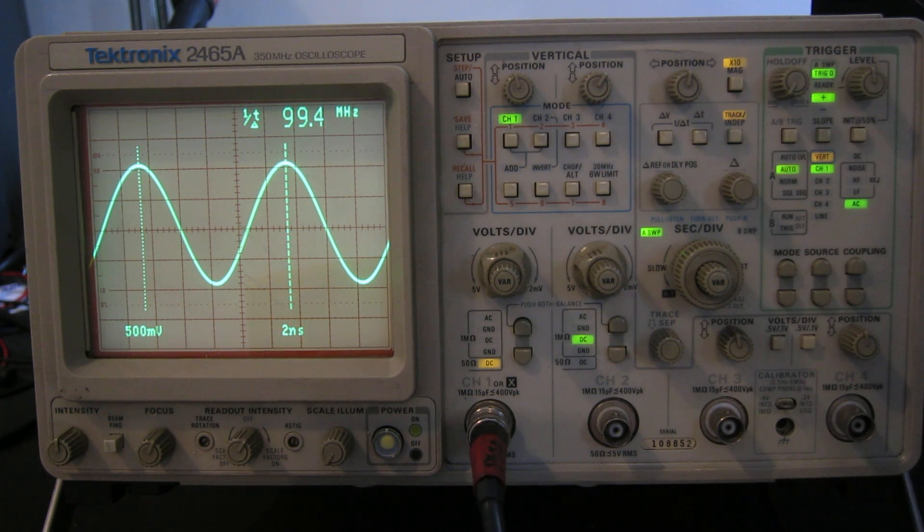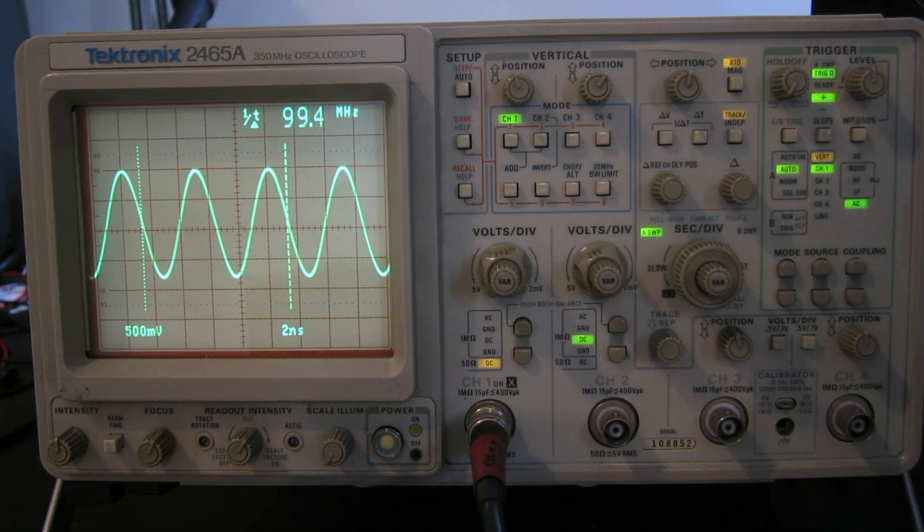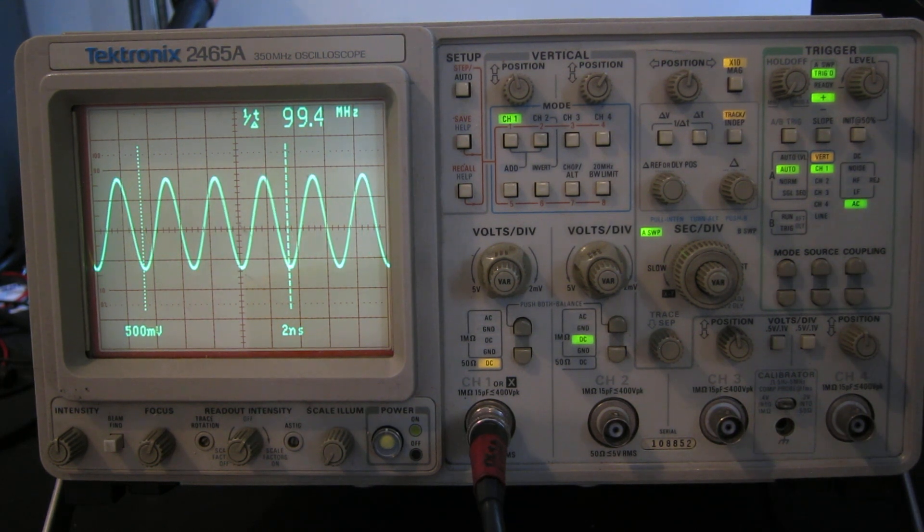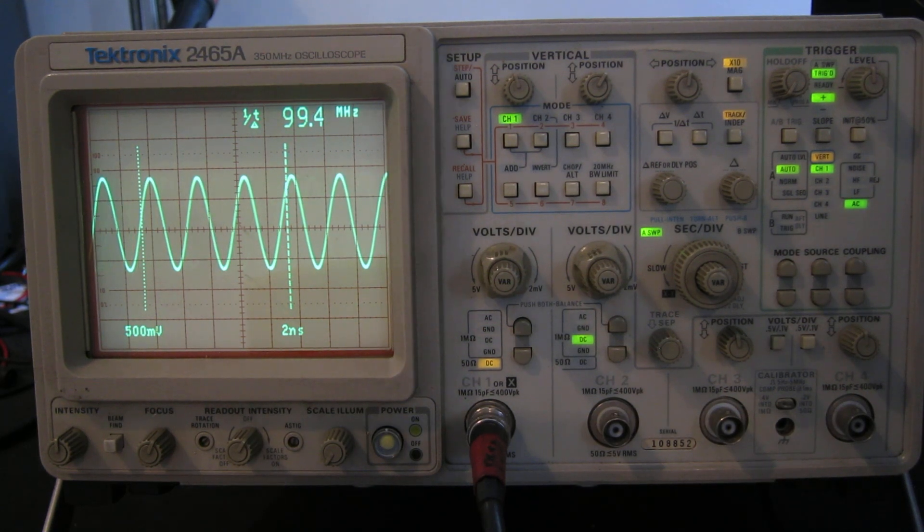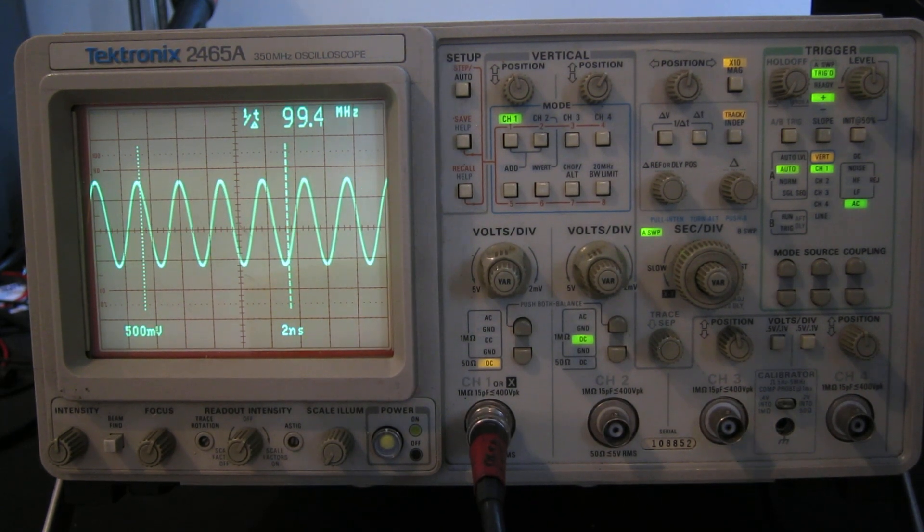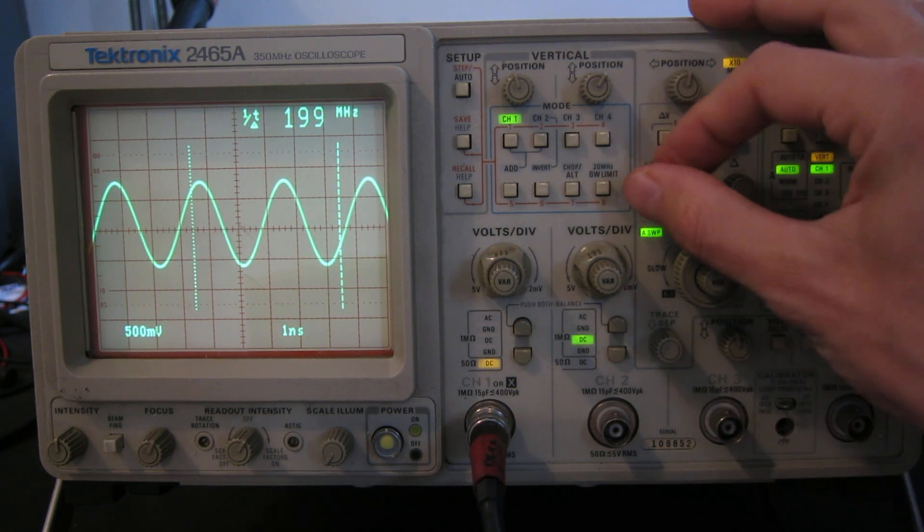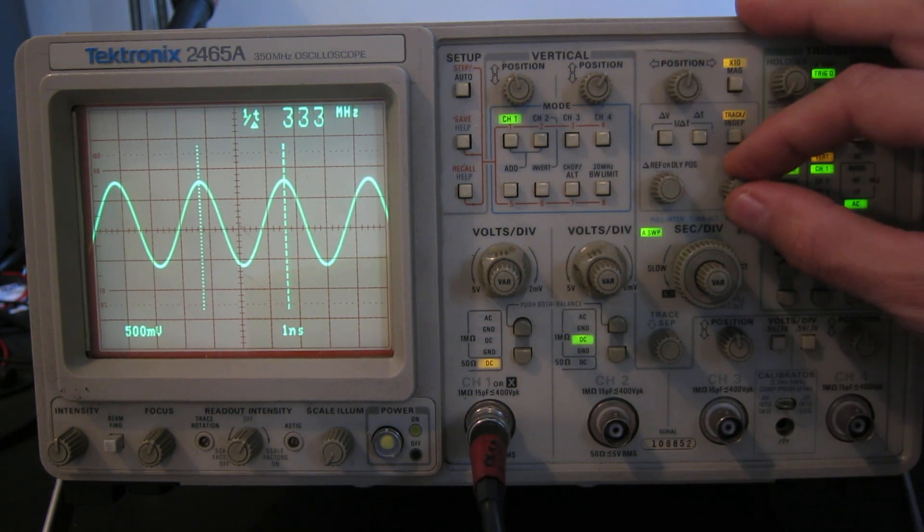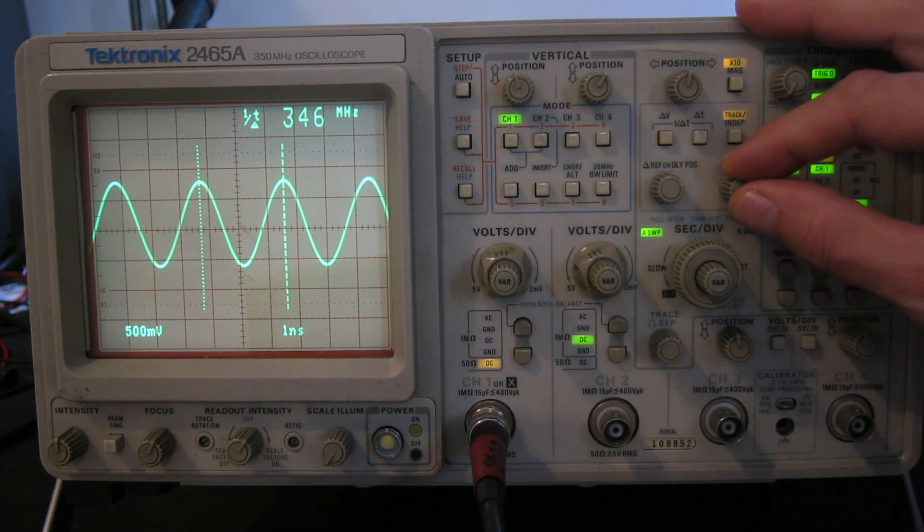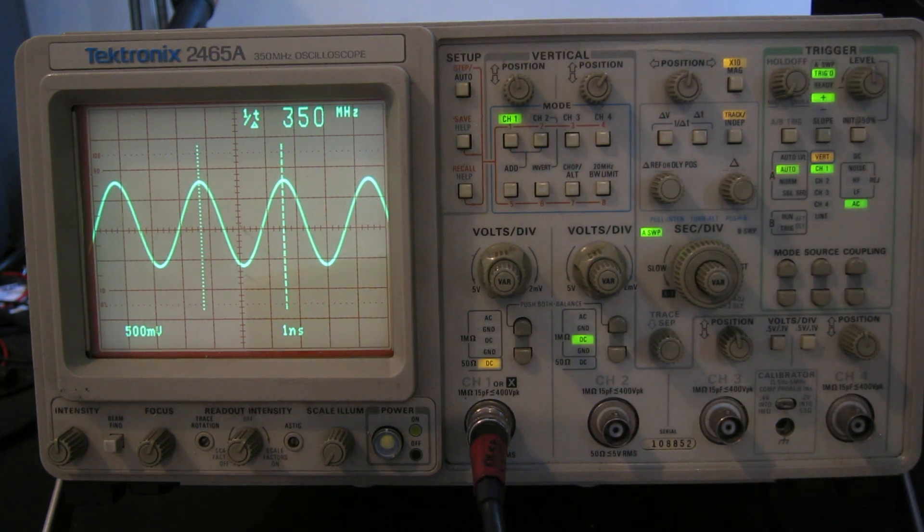That's a 100 megahertz signal, and I can increase the frequency of that. 200 megahertz, amplitude drops a little bit, as you'd expect. 300 megahertz, we will go 350 megahertz, which is the scope's minus 3 dB point. Just measure that between peak to peak. Here we go, 350 megahertz. But it carries on working well beyond that, actually. The amplitude drops off, obviously.